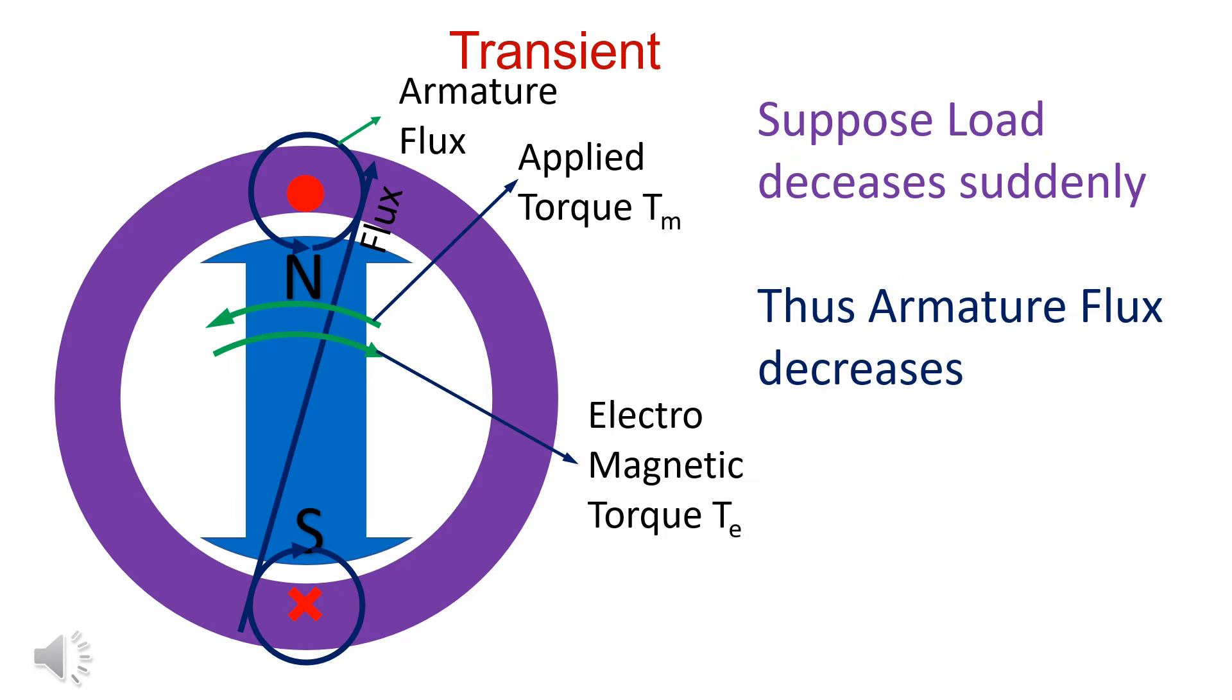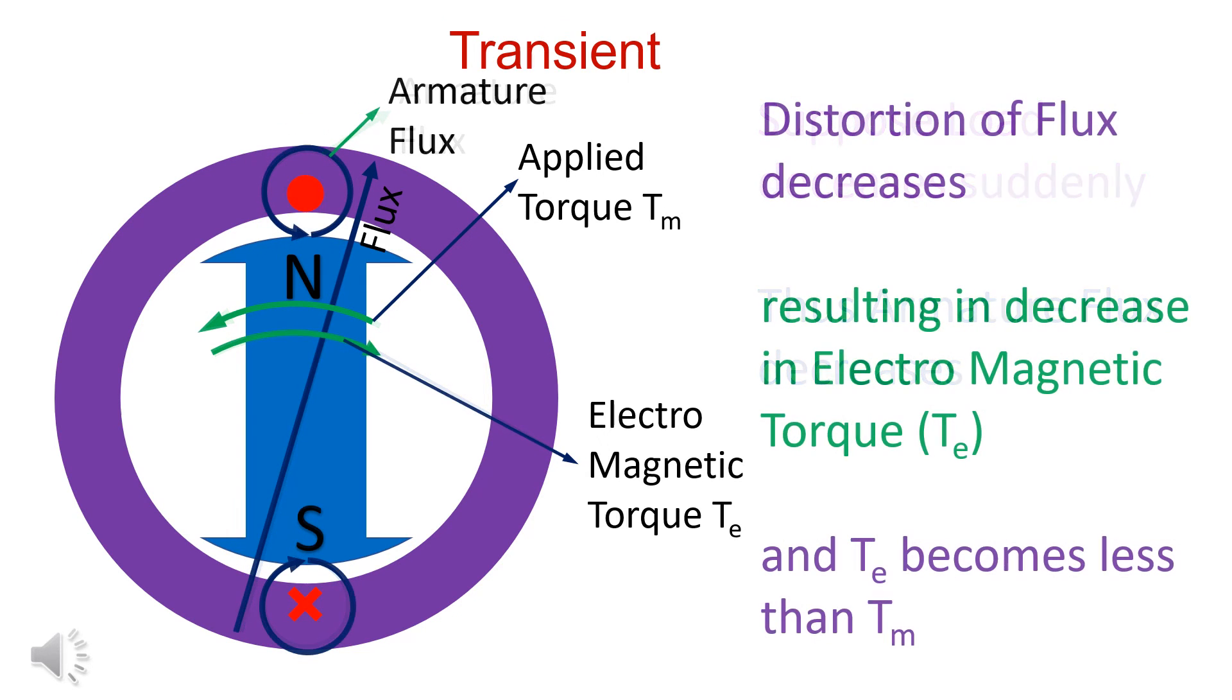When electrical load decreases suddenly, armature flux decreases. The distortion of flux decreases and hence, electromagnetic torque Te decreases and becomes less than Tm.